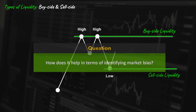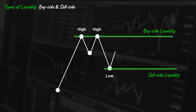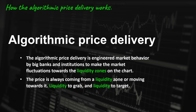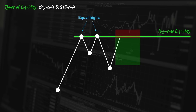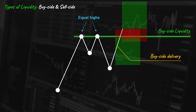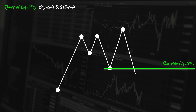How does it help in terms of identifying market bias? To answer this question, you need to know how the algorithmic price delivery works. The algorithmic price delivery is engineered market behavior by big banks and institutions to make market fluctuations move towards the liquidity zones on the chart. The price is always coming from a liquidity zone or moving towards it — liquidity to grab and liquidity to target. When the price approaches buy-side liquidity, the bearish traders will go short or protect their previously opened short positions. On the other hand, breakout traders will go long if the price breaks through this level. The animated movement that aims to grab this liquidity is called the buy-side delivery — it runs high to engage the liquidity above these relative equal highs.